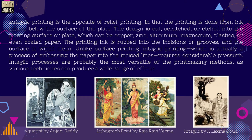Intaglio printing is the opposite of relief printing in that the printing is done from ink that is below the surface of the plate. The design is cut, scratched or etched into the printing surface or plate, which can be copper, zinc, aluminium, magnesium, plastics or even coated paper. The printing ink is rubbed into the incisions or grooves and the surface is wiped clean. Unlike surface printing, intaglio printing, which is actually a process of embossing the paper into the incised lines, requires considerable pressure. Intaglio processes are probably the most versatile of the printmaking methods as various techniques can produce a wide range of effects.